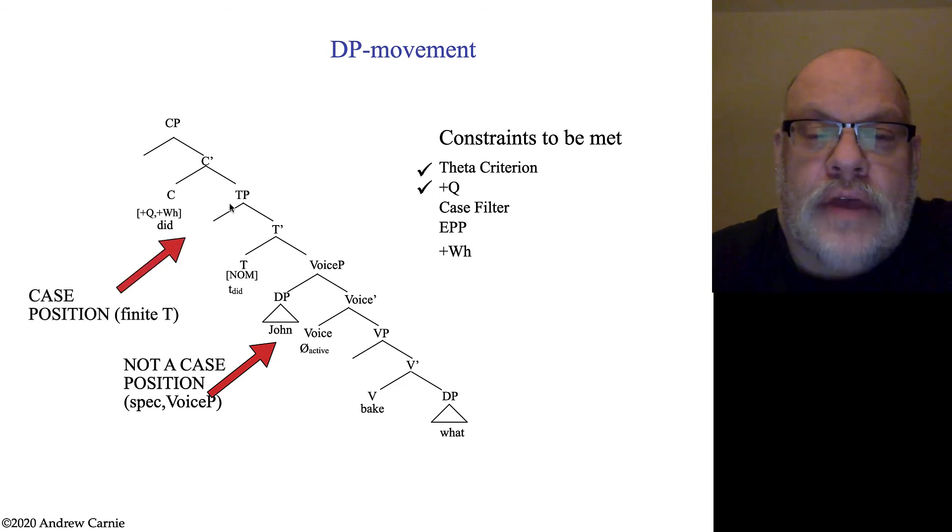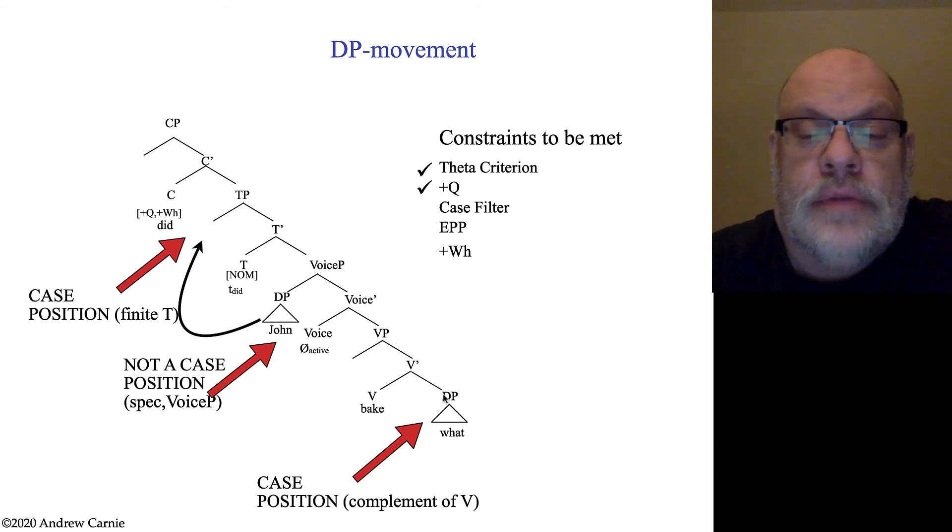Remember, there's only three case positions. Specifier of finite T for nominative case, complement to a preposition for prepositional case, and complement to a verb for accusative case. So, this guy can't stay there. It's going to have to move. We have a case position right here. We have a finite T. And I've marked it with a nominative case feature to indicate that this is a position in which we can check nominative case. So, that DP moves into the specifier of the TP.